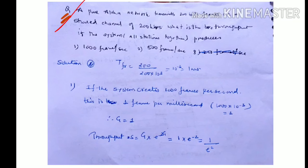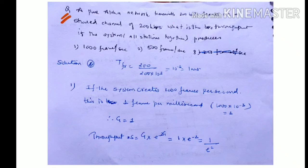Given a pure Aloha network transmitting 200-bit frames on a shared channel of 200 kbps. Frame size is 200 bits, channel bandwidth is 200 kbps. The system generates 1000 frames per second, 500 frames per second, and 250 frames per second. First, we find the transmission time of a frame: Tf = frame size / bandwidth = 200 bits / 200 kbps = 200 / (200 × 10³) = 10⁻³ = 1 millisecond.